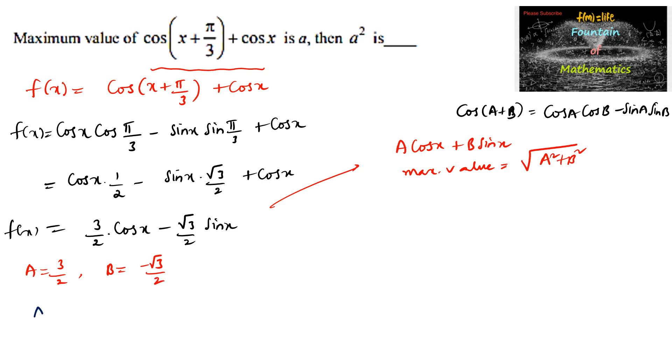On simplifying, we can get A² + B² is equal to 9/4 + 3/4, that is 12/4, which is 3. So A² + B² is 3, therefore the maximum value is √3.